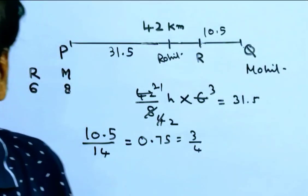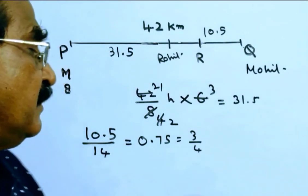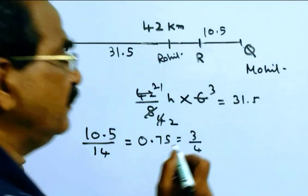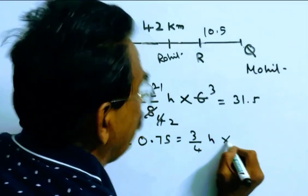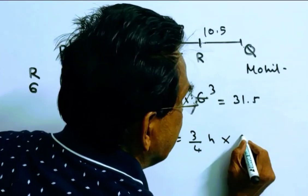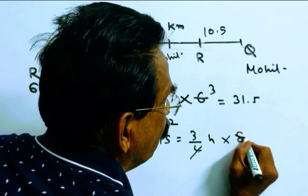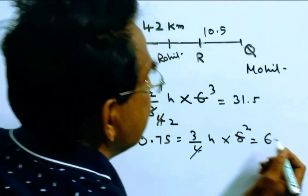Friends, they meet at point R in 3 by 4 hours. Friends, in this 3 by 4 hours, Mohit travels 3 by 4 into 8. Simplifying, that's 6 km.